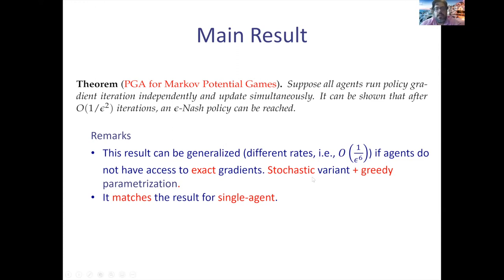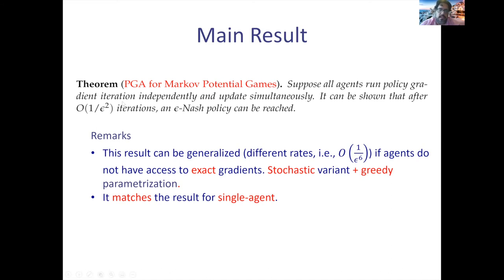This is the stochastic variant. Even for this stochastic variant, with high probability — since you now have estimates — you can reach an ε-Nash policy if players use stochastic policy gradient independently with simultaneous updates. However, the learning rate needed is 1/ε⁶ rather than 1/ε². Moreover, for the stochastic variant we don't use direct parameterization but something called greedy parameterization.